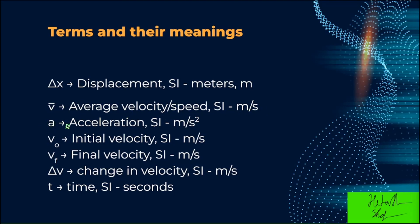Then we have acceleration, which is represented by a lowercase a, and the SI unit for it is meters per second squared. Then we have v naught, this little o in the subscript. It means naught, and it just means initial velocity. Naught is spelled N-A-U-G-H-T.